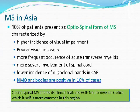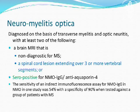In Asia, 40% of MS patients present with a spinal form, in which there is a higher incidence of visual impairment and poorer visual recovery. NMO antibodies are positive in about 10% of cases. Neuromyelitis optica is another important entity to be aware of.